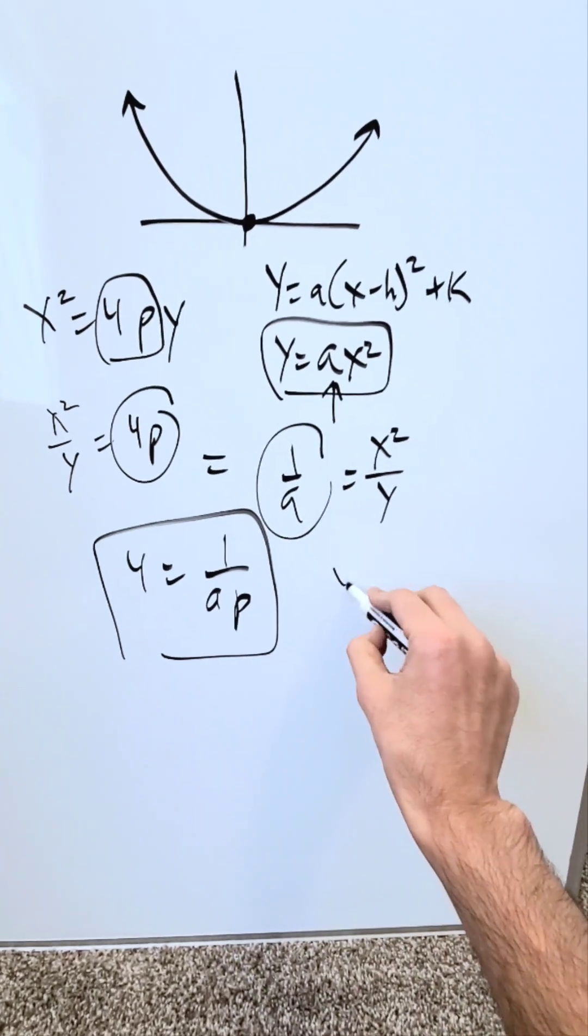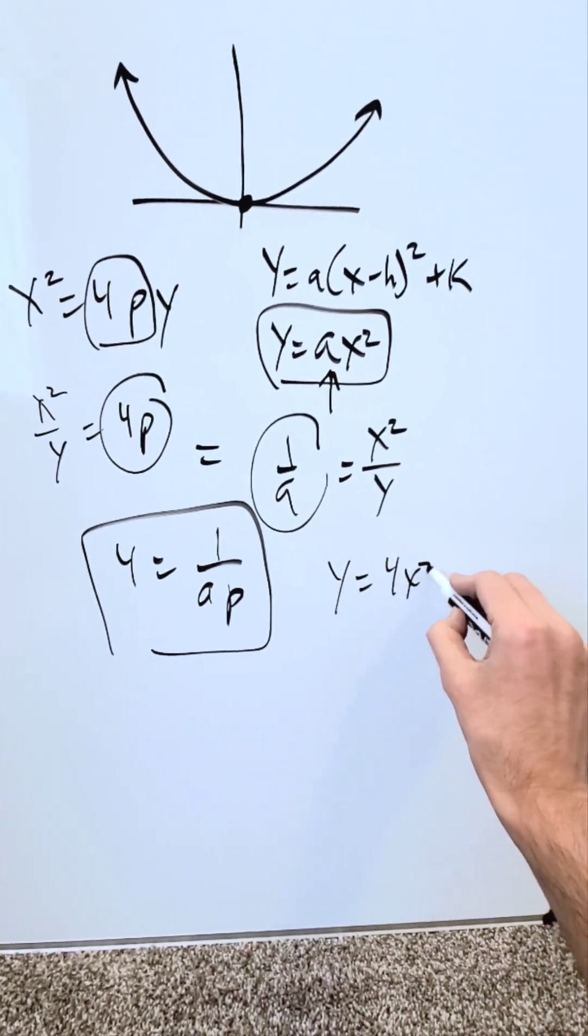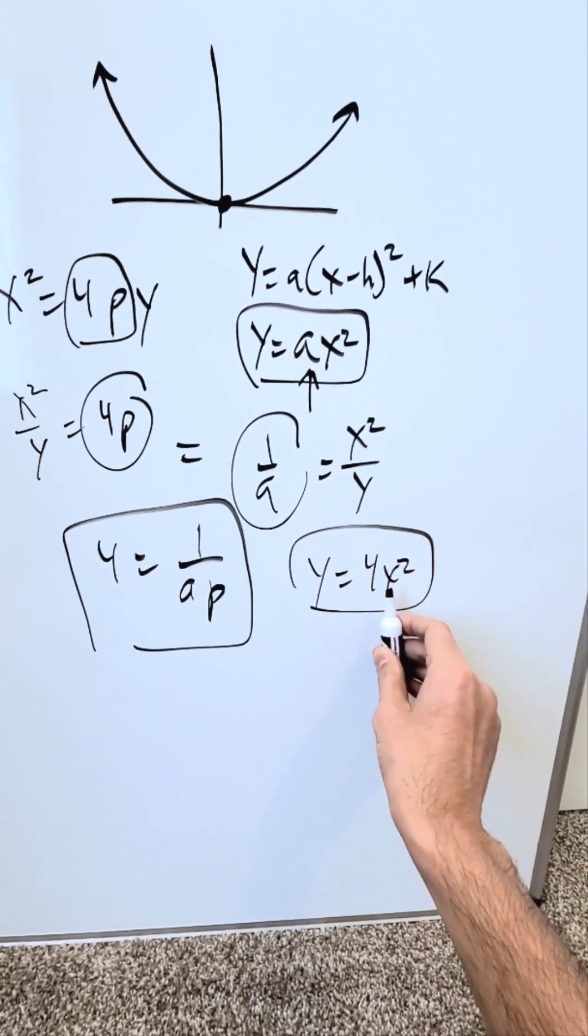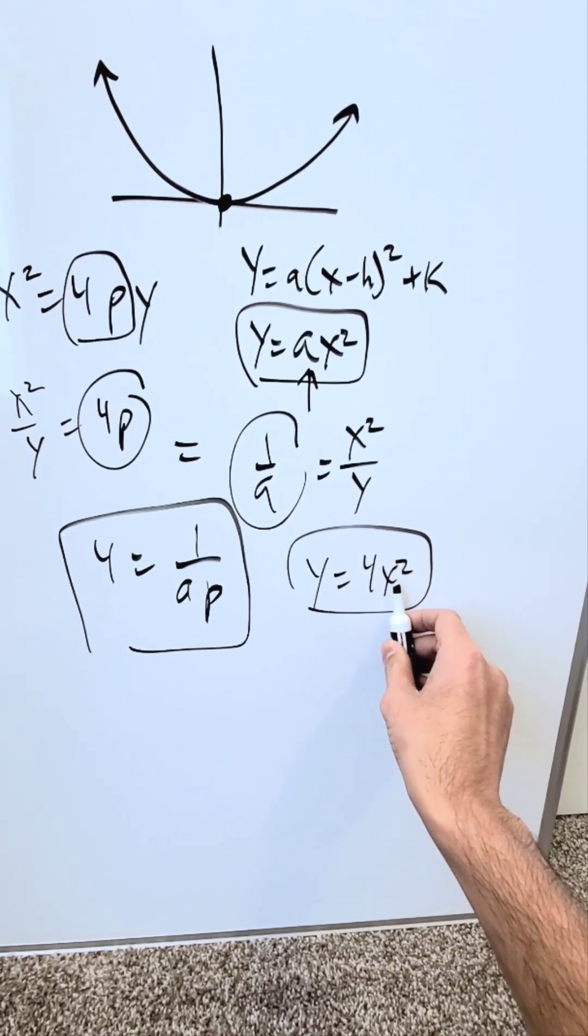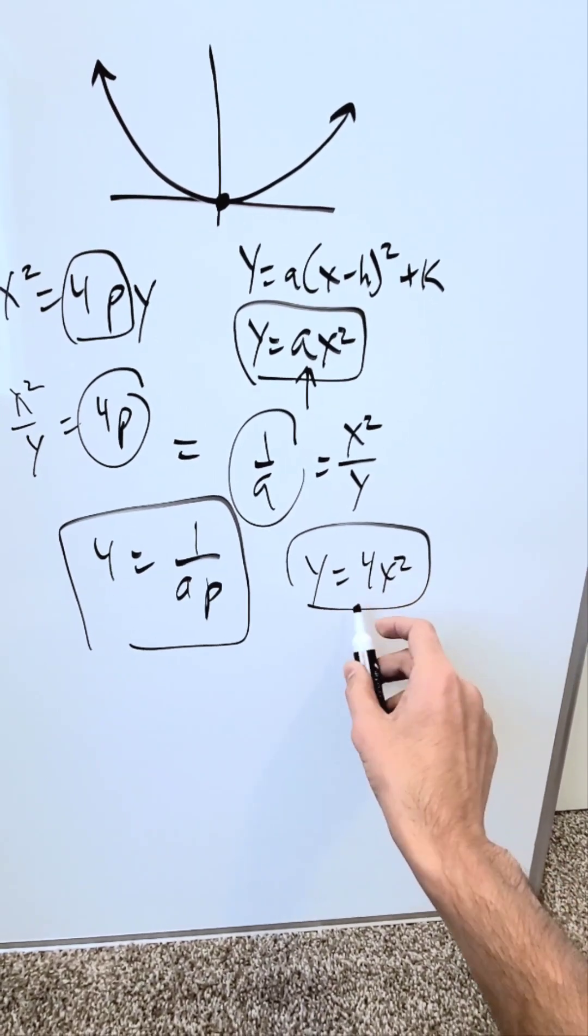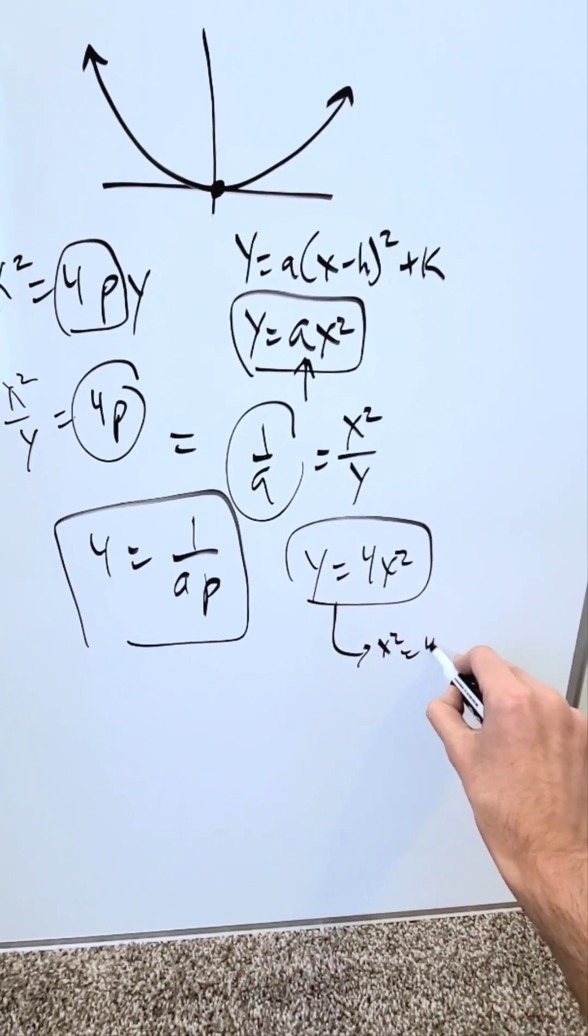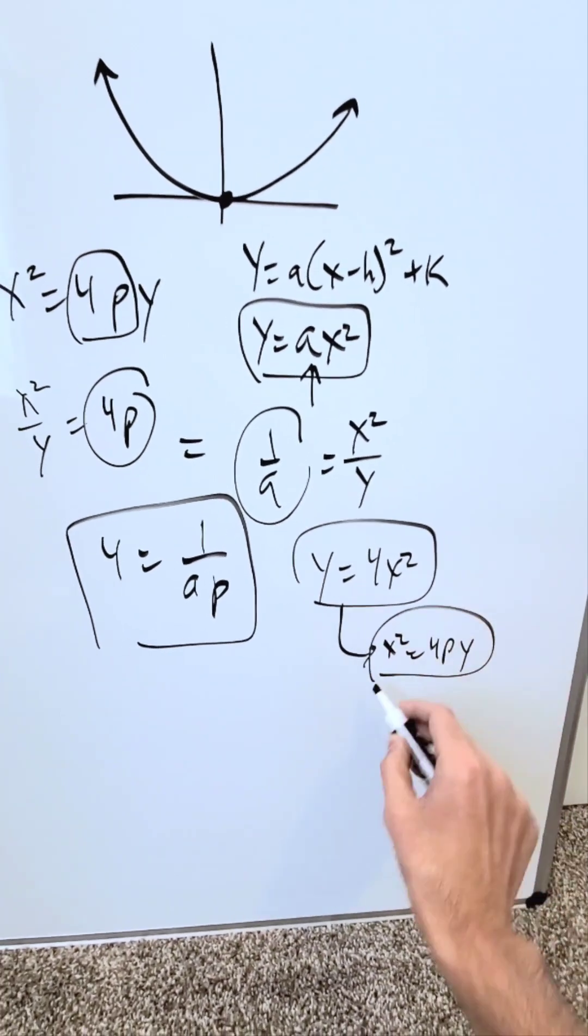And I'll give you an example. y equals, let's say, 4x squared. Standard orientation parabola with a certain vertical stretch to it. Vertex is at the origin, but you can easily relate this into x squared equals 4py form. And I'll show you how.